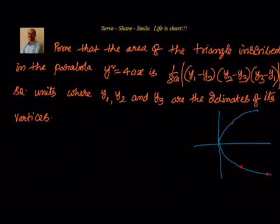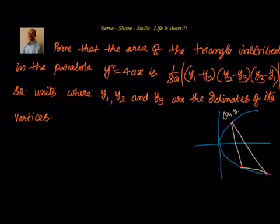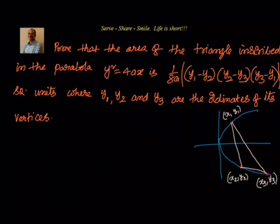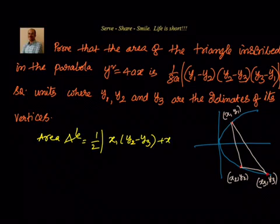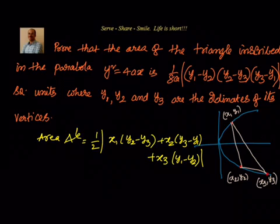They are asking us to find out the area of the triangle. We have to find out this area of the triangle. We know these points are x1, y1; x2, y2; and x3, y3, where y1, y2, y3 are ordinates. We will leverage our 10th grade knowledge — the formula to find out the area of the triangle is half into the absolute value of x1 into y2 minus y3 plus x2 into y3 minus y1 plus x3 into y1 minus y2.